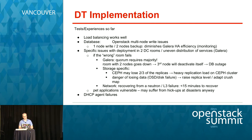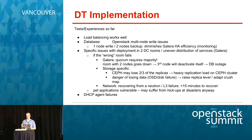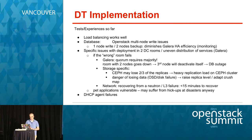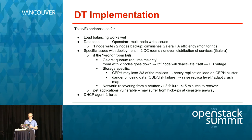We have load balancing with HAProxy and Keepalive for MySQL, for services, RabbitMQ, and the APIs. We are currently testing Nginx as well to reduce the number of different software components. We are using Galera since two years now and it's running very well on three nodes. RabbitMQ is clustered with mirrored queues.